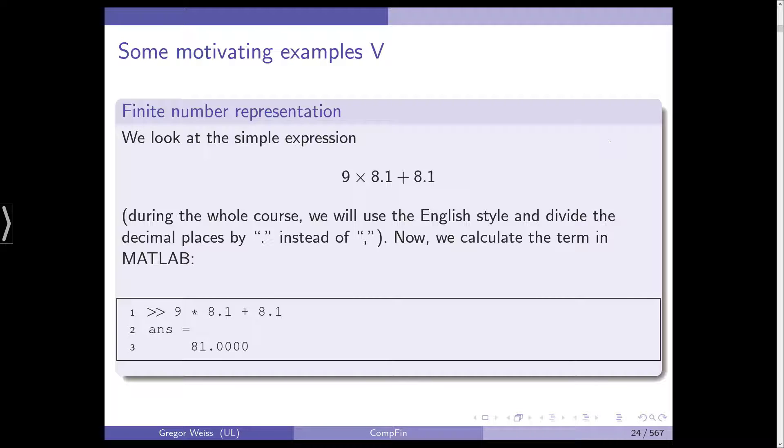Now, we want to calculate 9 times 8.1 plus 8.1. For those who are taking this class in Germany, just a reminder, in English, in the English style, decimal places are highlighted with a point instead of a comma, for example, as in German. Now, we calculate the term in MATLAB. 9 star, which means times 8.1 plus 8.1.